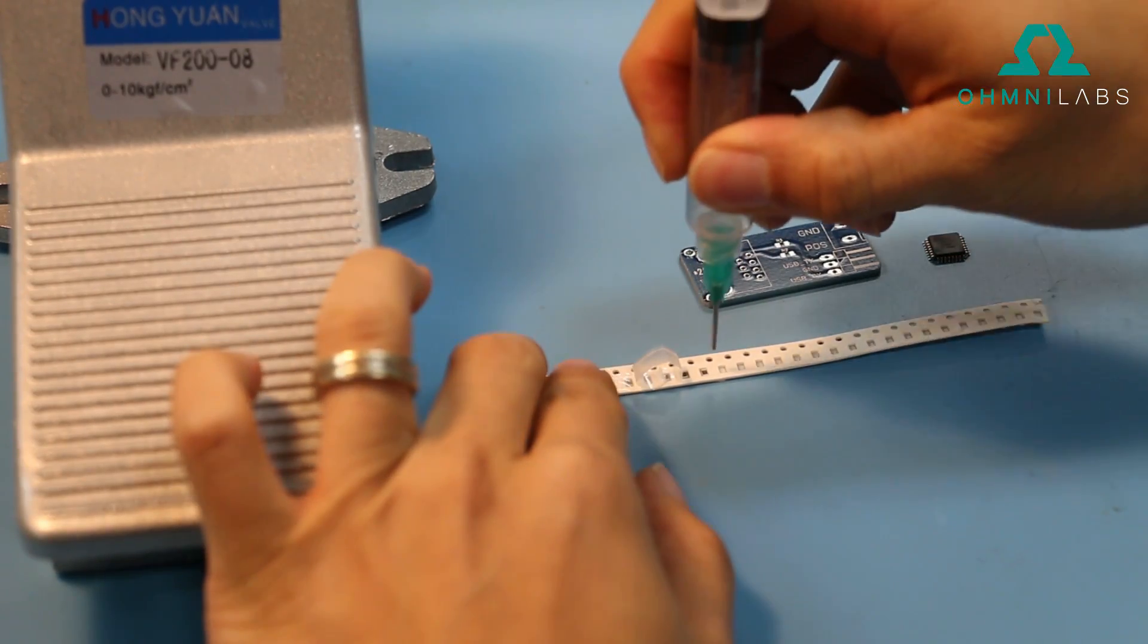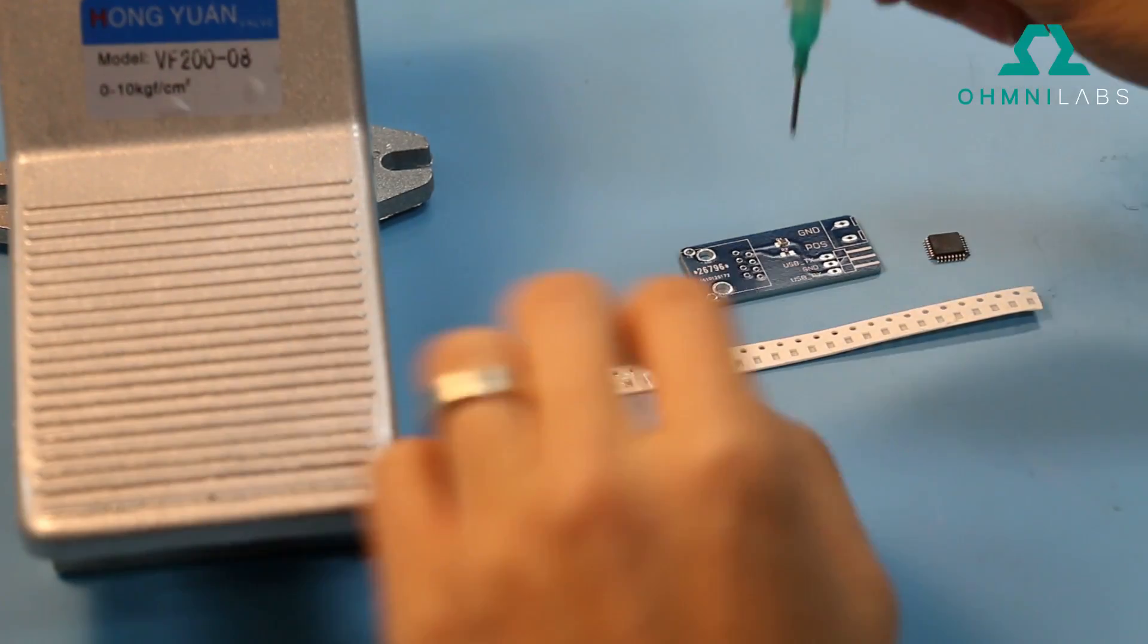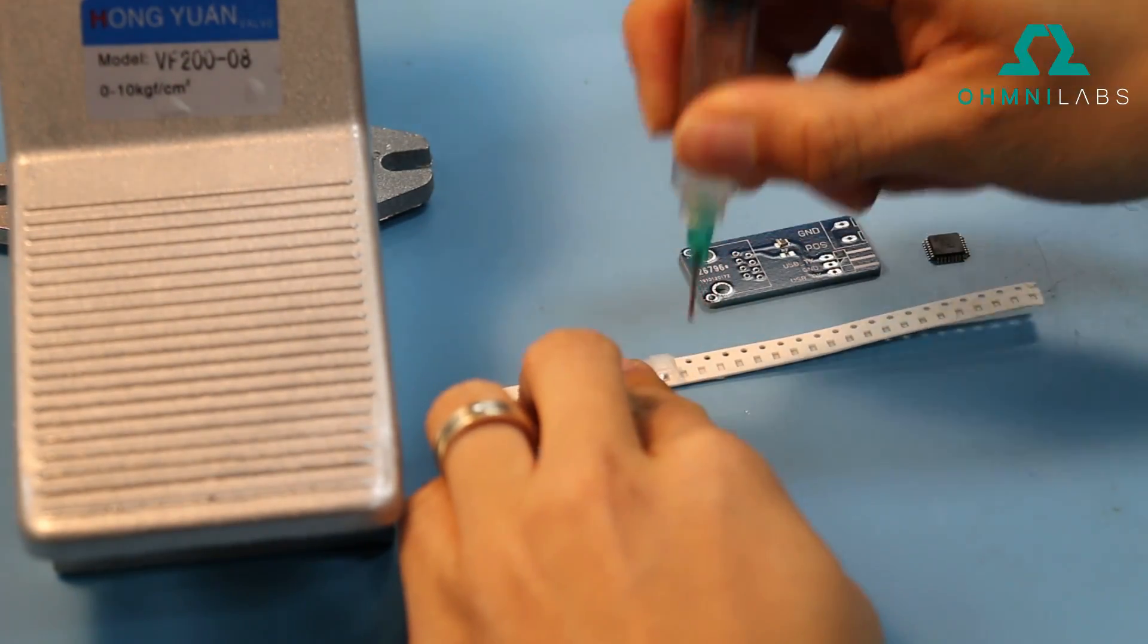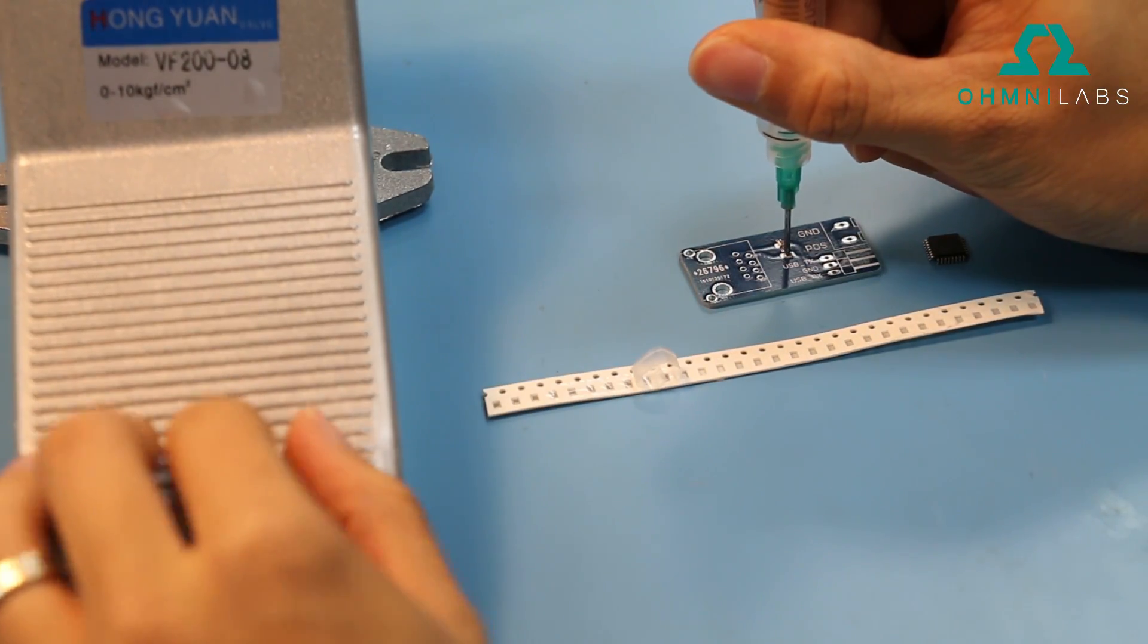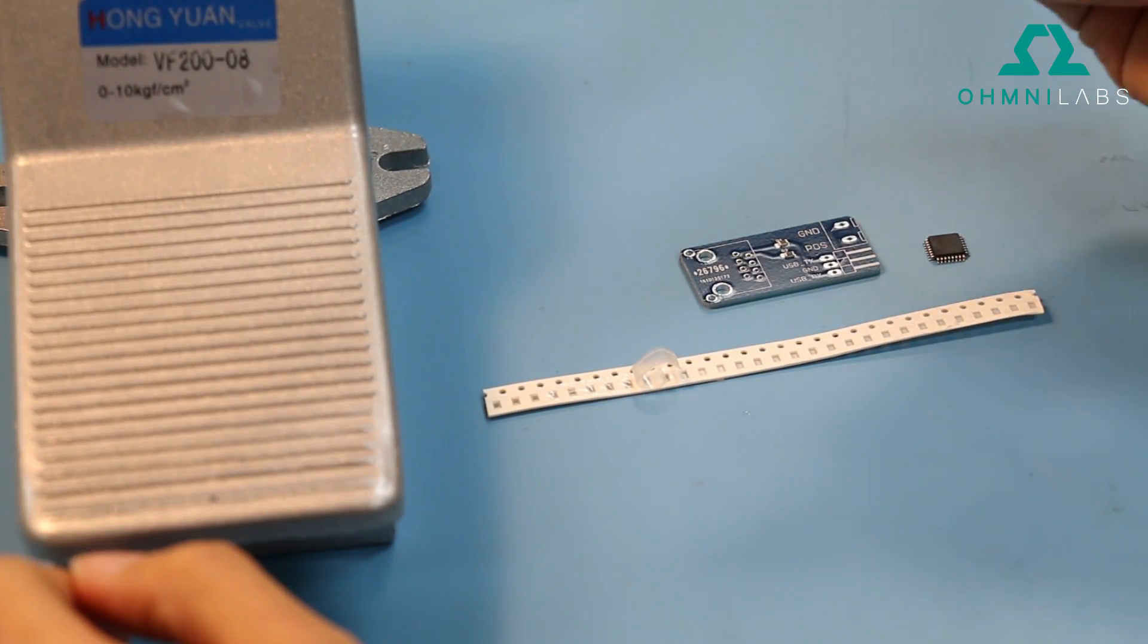So I'm going to turn first, pick up from the tape, put it in the spot, release. And we found that you can be about twice as fast using this vacuum pen than you would with tweezers.